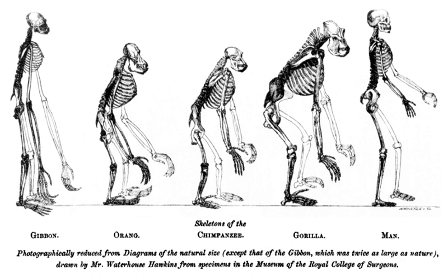Evidence as to Man's Place in Nature is an 1863 book by Thomas Henry Huxley, in which he gives evidence for the evolution of man and apes from a common ancestor. It was the first book devoted to the topic of human evolution, and discussed much of the anatomical and other evidence. Backed by this evidence, the book proposed to a wide readership that evolution applied as fully to man as to all other life.